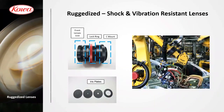Now I will go into the topic of mechanical design. In some applications it's important that the lenses are ruggedized — that the lenses are resistant to shock and vibration. We developed a specific mechanical design to achieve this. If you look at the picture in the upper left, you see a ruggedized lens.